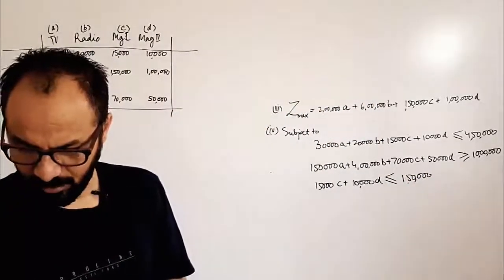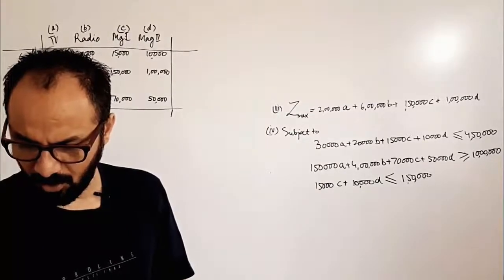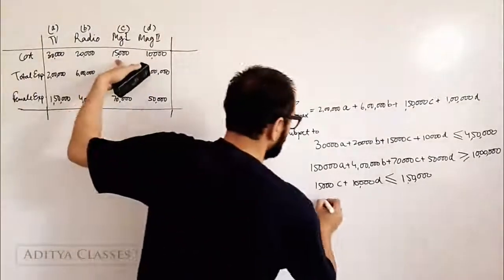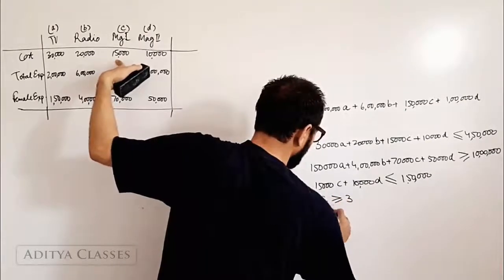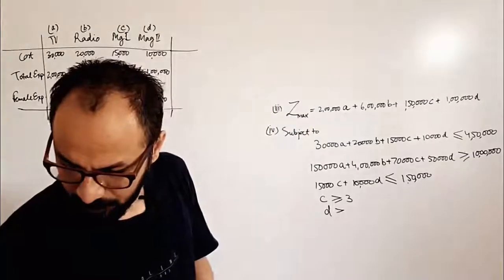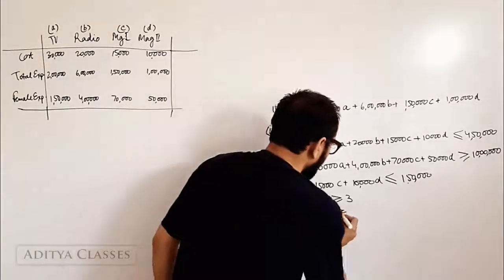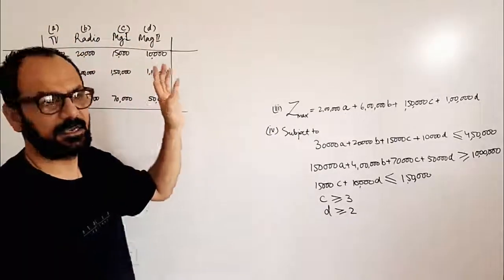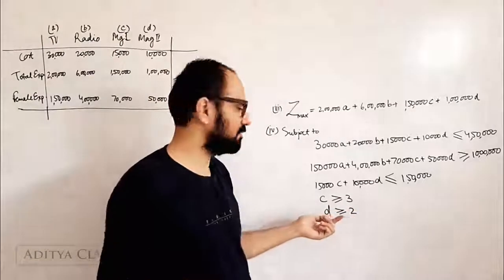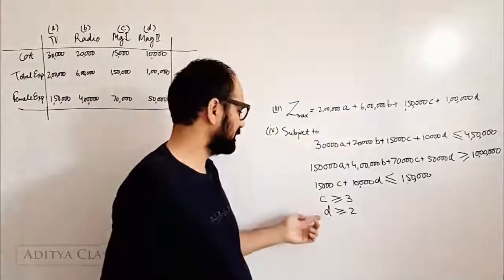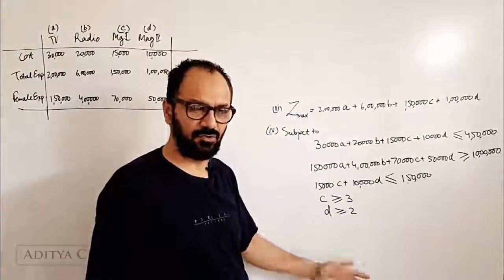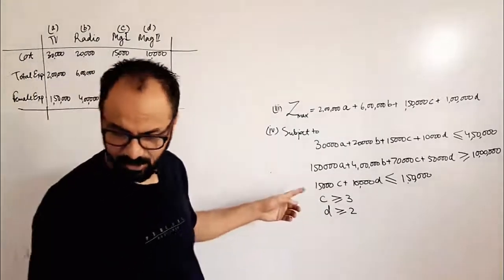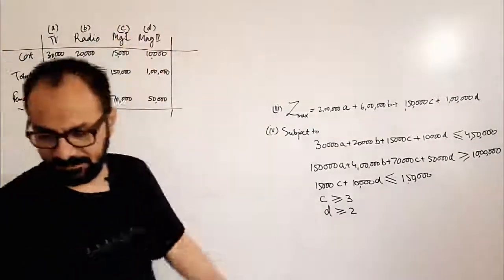Then we have the constraint that at least three advertising units should be bought on magazine one and two units on magazine two. So C should be greater than or equal to 3, and D should be greater than or equal to 2. You can put more, but you cannot go under 3 for magazine one or under 2 for magazine two.